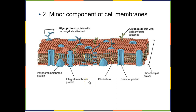Cholesterol is also a minor component of cell membranes. Depending on how much cholesterol is in your membrane, you either have a softer, more fluid membrane or a stiffer, less fluid one. Cholesterol breaks up some interactions between fatty acid tails so everything in the membrane moves around more. Fish in colder waters have more cholesterol in their membranes so they don't harden the way olive oil would if you put it in the freezer.